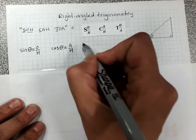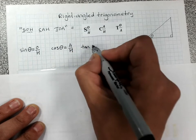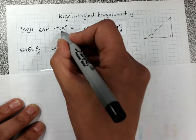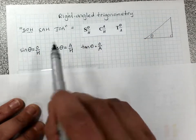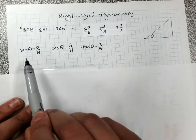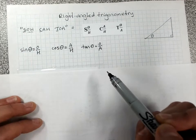And TOA is tan. Don't forget to put theta equals, and then O over A. And every trig problem that you're going to solve in right-angle trigonometry will just be using one of these to get the right answer.